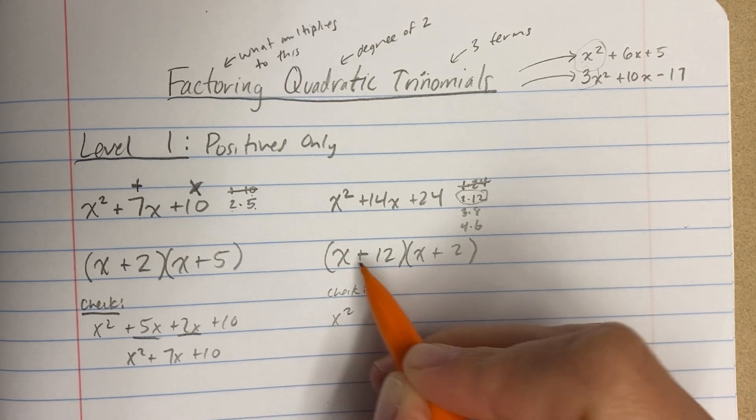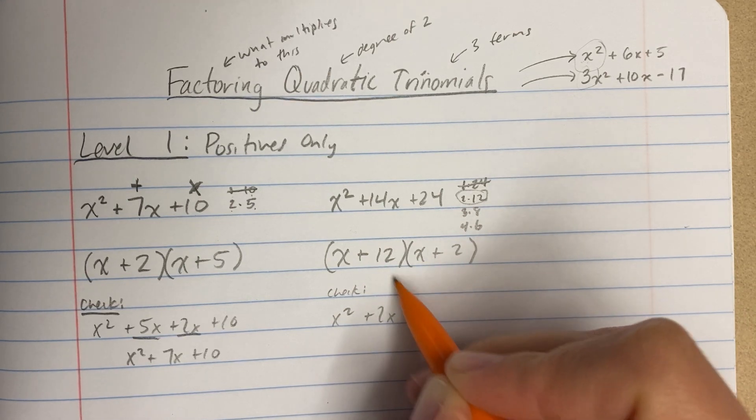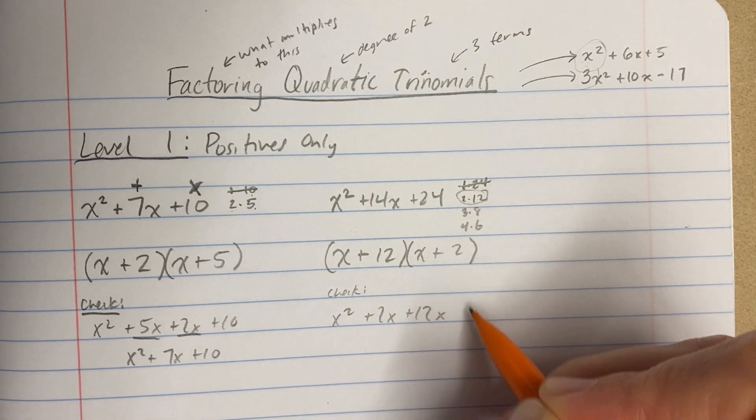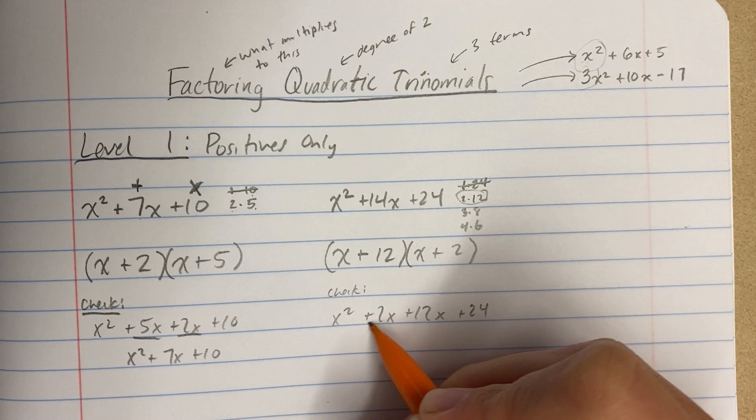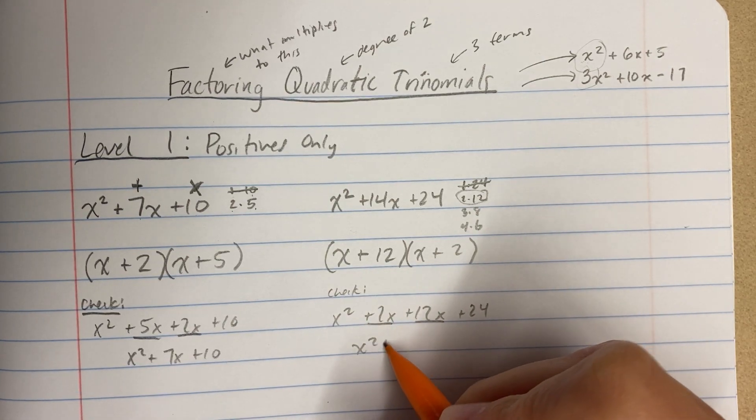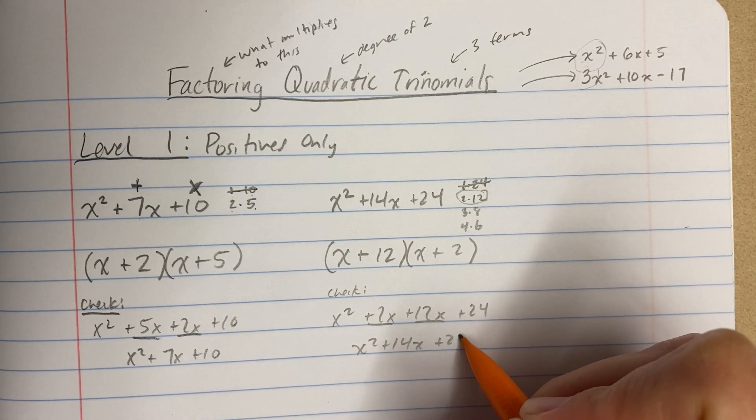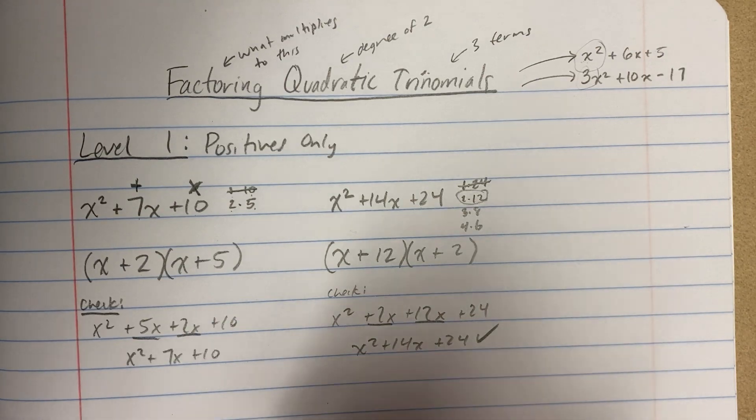x times x is x squared plus 2x plus 12x plus 24. And then, of course, these will add and become 14. So I'm all set. And that is the correct answer. Let's do one more.